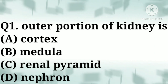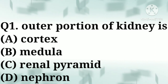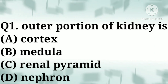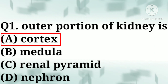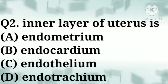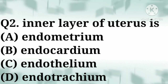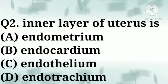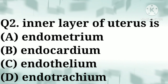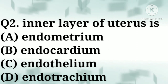Correct answer: option A, cortex. Question number two: the inner layer of the uterus is — option A: endometrium, option B: endocardium, option C: endothelium, option D: endotracheum.